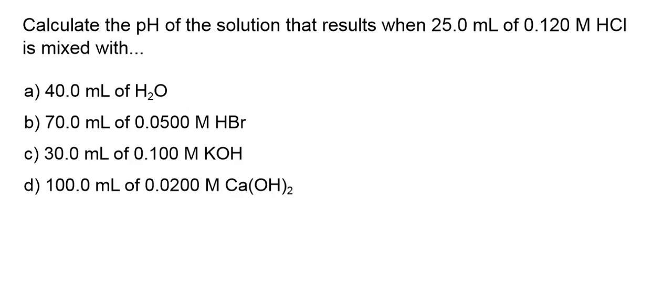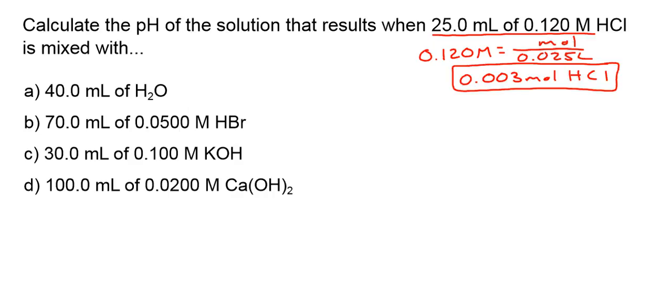If I look at the beginning of this, this is the only thing that's going to be consistent from one to the next. If I have a 0.120 molar solution, I can determine the number of moles of HCl I have. The resulting answer is 0.003 moles of HCl.